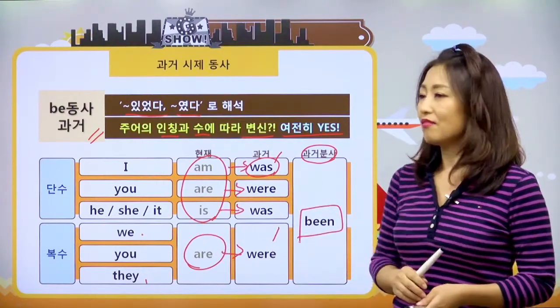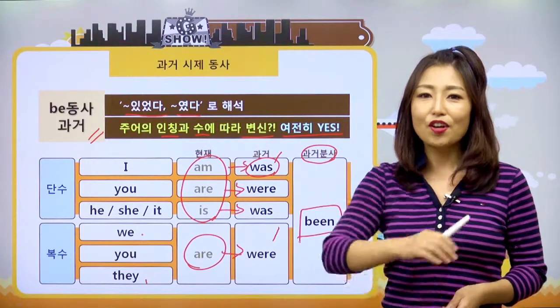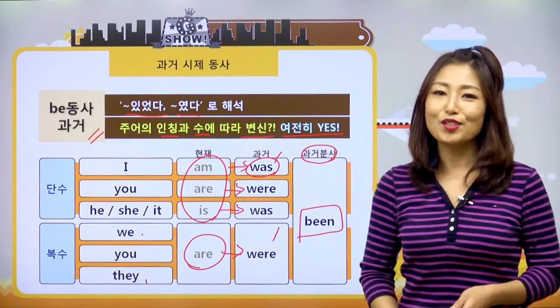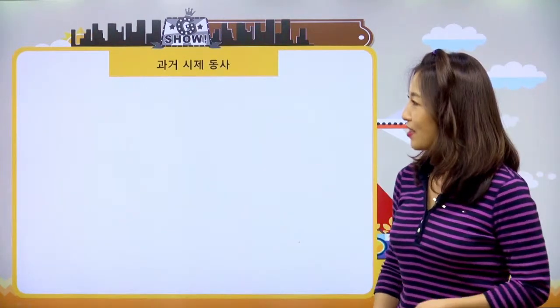우리 친구들이 앞으로 문법을 배우면서 과거분사를 사용해야 하는 경우들이 많이 있어요. 그것 때문에 이번 과거 동사 편에서는 과거분사까지 같이 설명을 하도록 할게요. 이렇게 동사의 3단 변화로 함께 외우면 훨씬 더 편리합니다. 비동사의 과거분사의 형태는 been이에요. 그래서 am, are, is, was, were, 그리고 과거분사는 been이에요.